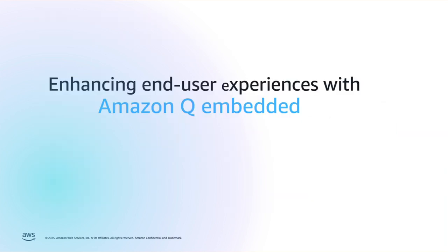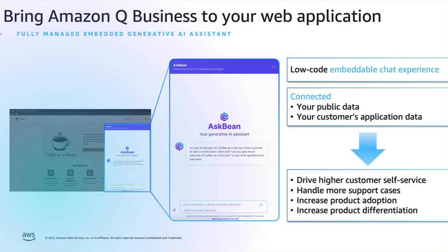Now that we have discussed Q-Index and how ISV enterprise data can be stored there, let us learn about end-user experiences using Amazon Q-Embedded. Amazon Q-Embedded is a feature that lets you embed the Amazon Q-Business assistant within websites that you trust. If you have a company intranet website, you can create an Amazon Q web experience using your company data, then embed that web experience on your website. Your users can log into the chat experience using their company credentials and ask the embedded Amazon Q-Business chat experience questions.